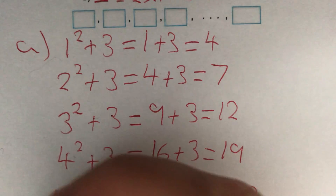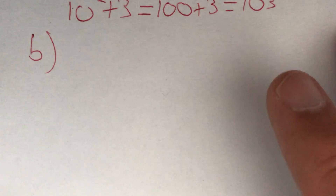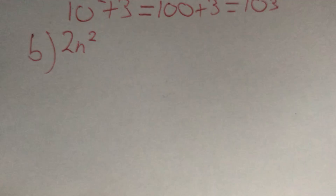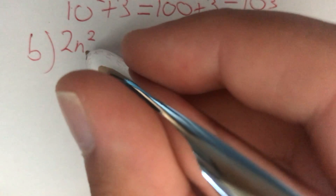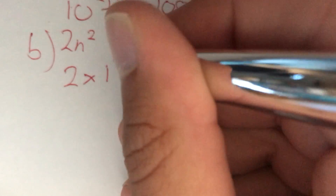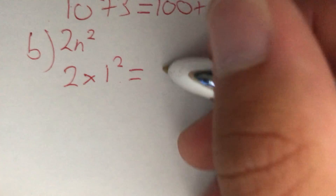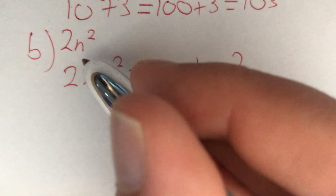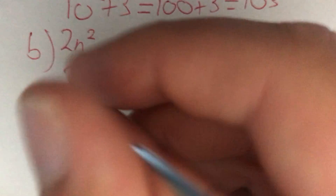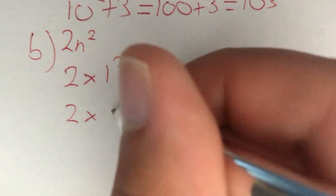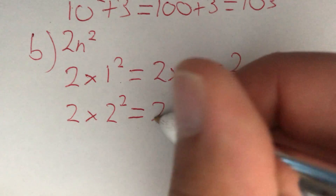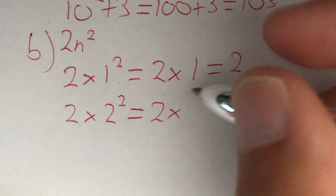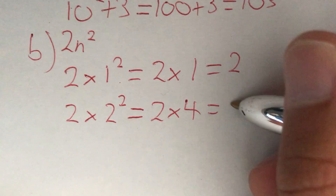For part B, we're asked to find the first four terms and the tenth term. Our sequence is 2n squared. For our first term, we replace n with 1. So it's 2 times 1 squared. 1 squared is just 1, so 2 times 1 gives us 2. For our second term, we replace n with 2. So 2 times 2 squared. 2 squared gives us 4, so we've got 2 times 4, which is equal to 8.